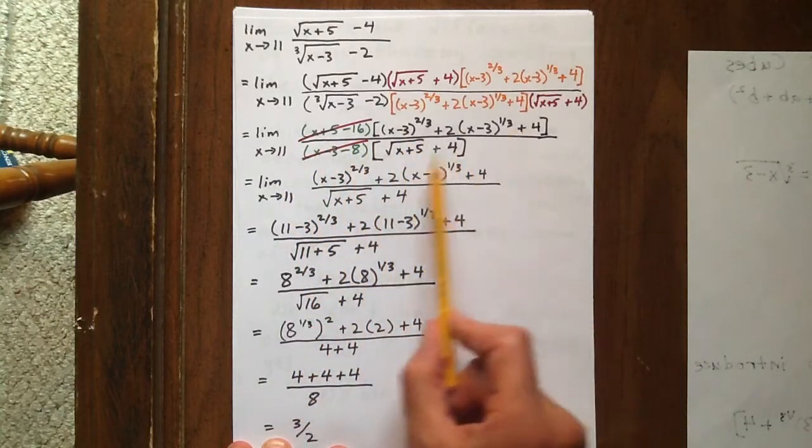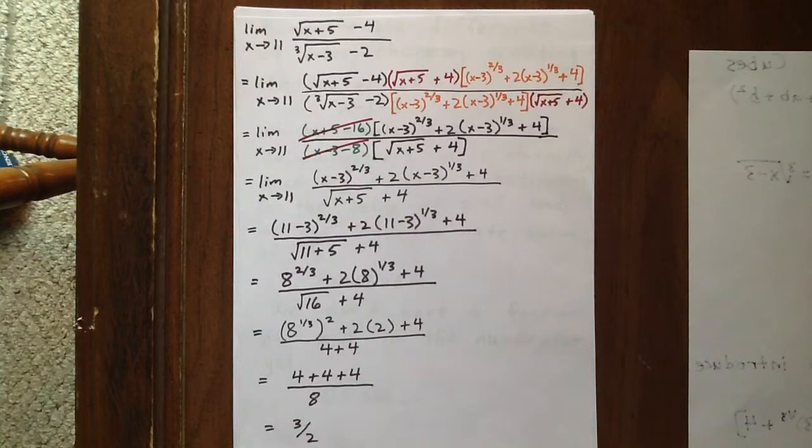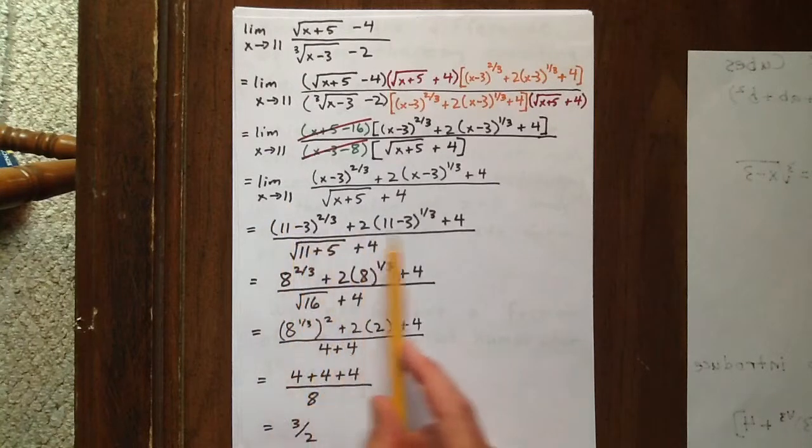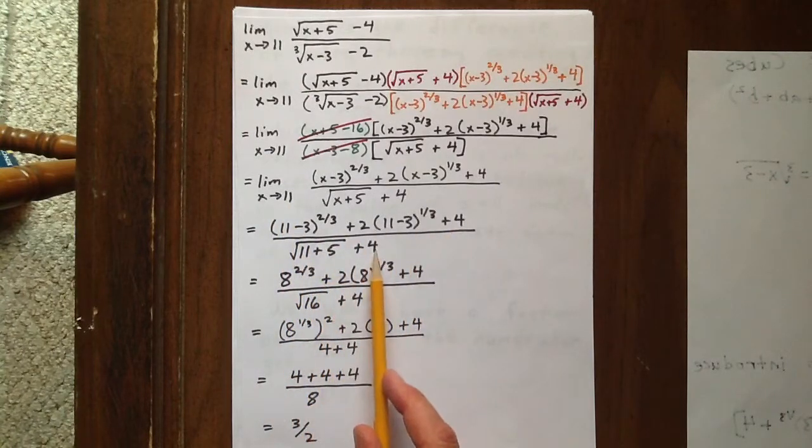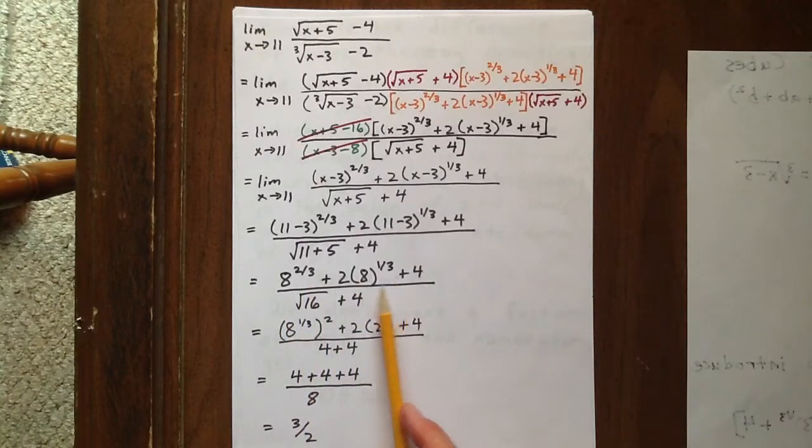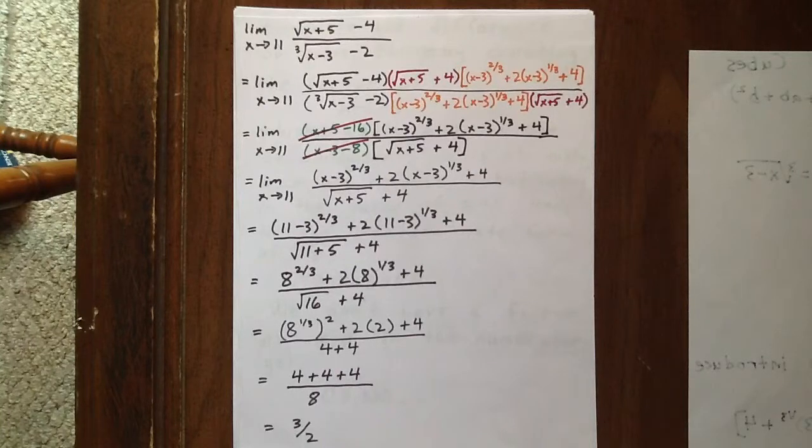And we're left with this expression in the numerator and this expression in the denominator. From here, we can substitute in an x value of 11 and not get an indeterminate form. What we get is 8 to the 2 thirds plus 2 times 8 to the 1 third plus 4 over root 16 plus 4, which equals 3 halves.